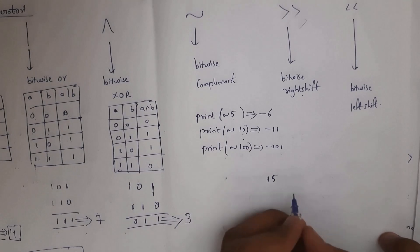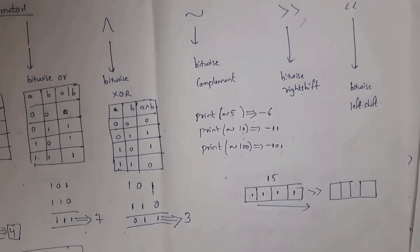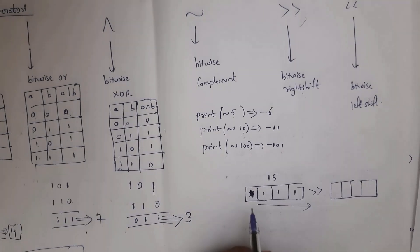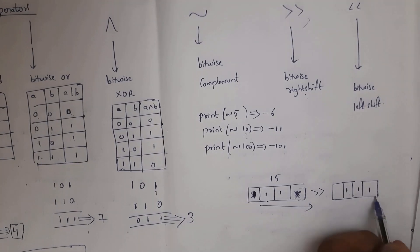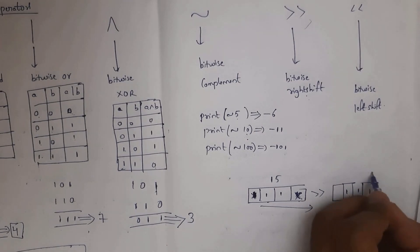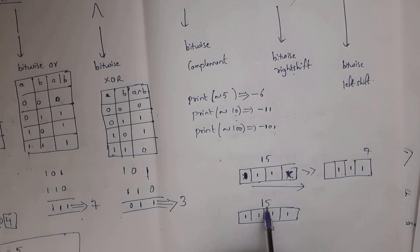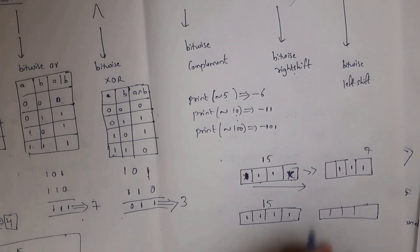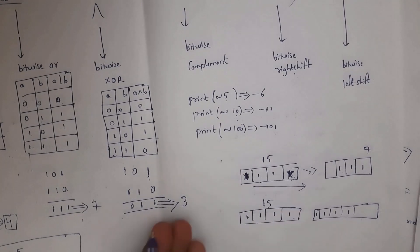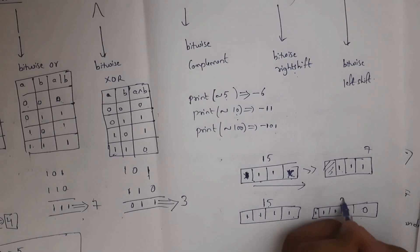For bitwise right shift (>>): consider 15, which in binary is 1111. Right shift removes the last binary digit, giving 111, which equals 7 in decimal. For bitwise left shift (<<): 15 in binary is 1111. Left shift appends a 0, giving 11110, which equals 30 in decimal.